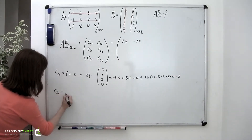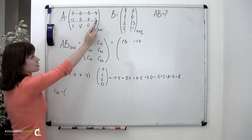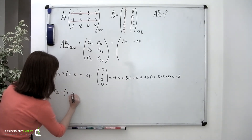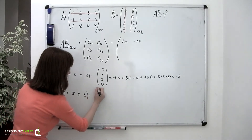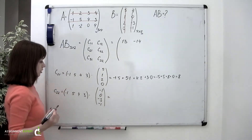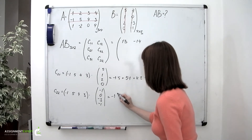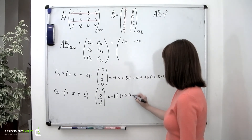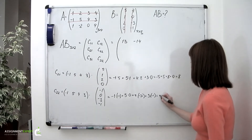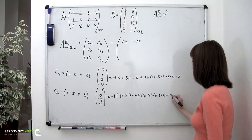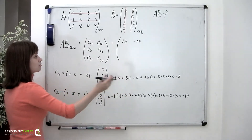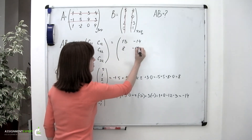C sub 2,2 is found by multiplying the elements of the second row of the first matrix by the elements of the second column of the second matrix. We have negative 1 times negative 1, plus 5 times 0, plus 4 times negative 3, plus 3 times negative 1. So we have 8 and negative 14 as our second row.